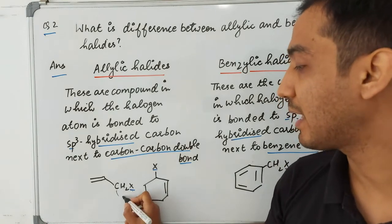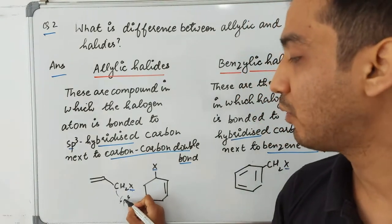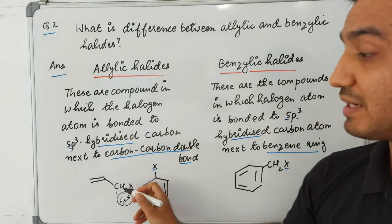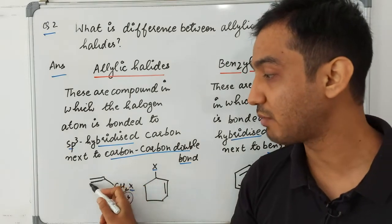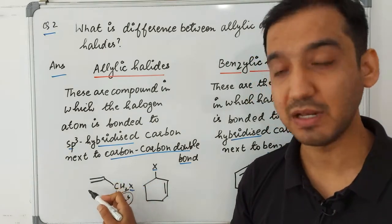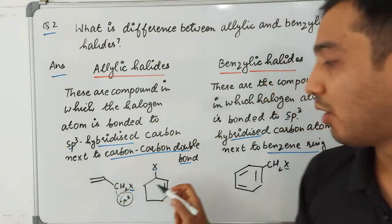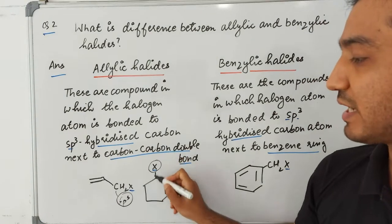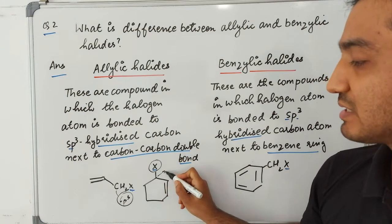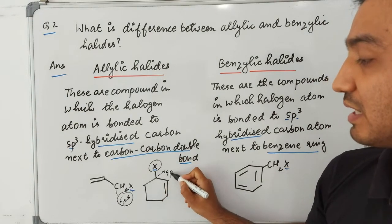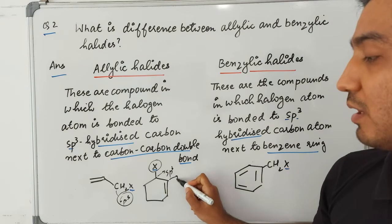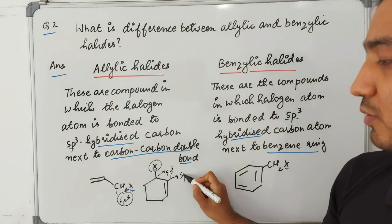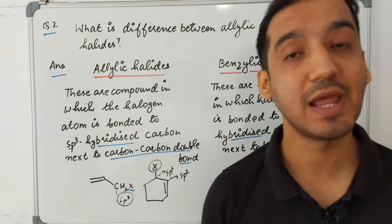In allylic halides, there is a halogen attached to a carbon — this carbon is sp3, but it is attached to another carbon which has a double bond (sp2 carbon). So these types of compounds are called allylic halides.